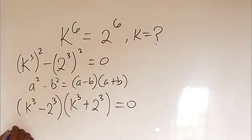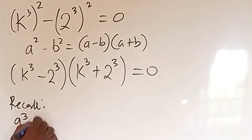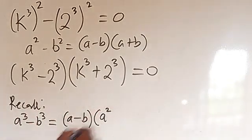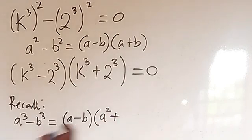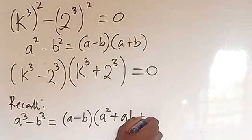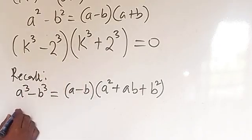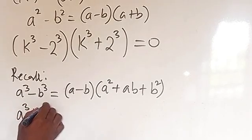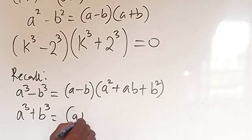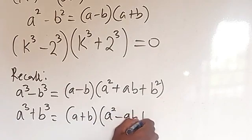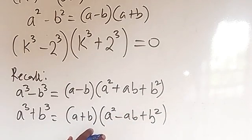Recall again: if you have a³ minus b³ — difference of two cubes — this gives us (a minus b)(a² + ab + b²). And if you have a³ plus b³ — sum of two cubes — this gives us (a plus b)(a² minus ab + b²).